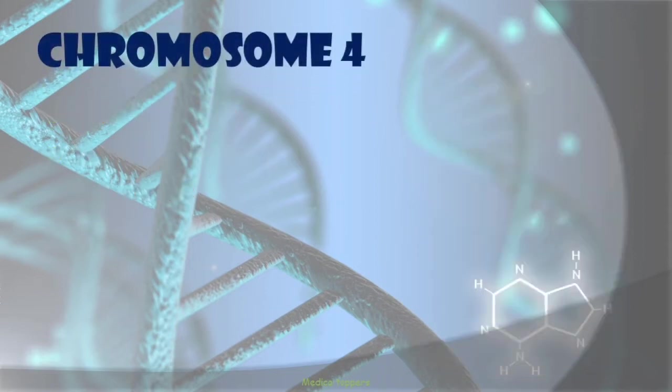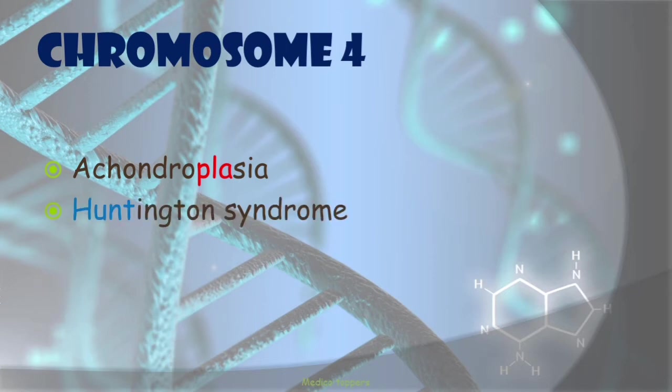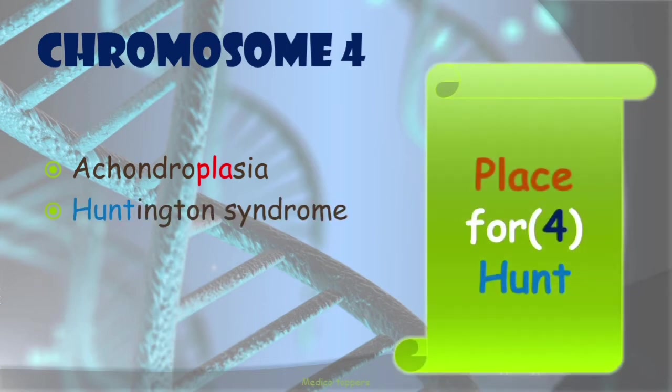Then comes chromosome 4, associated with Achondroplasia and Huntington's disease. The mnemonic is 'Place for Hunt.' So 'place' is for Achondroplasia, '4' for chromosome number 4, and 'Hunt' for Huntington's syndrome.